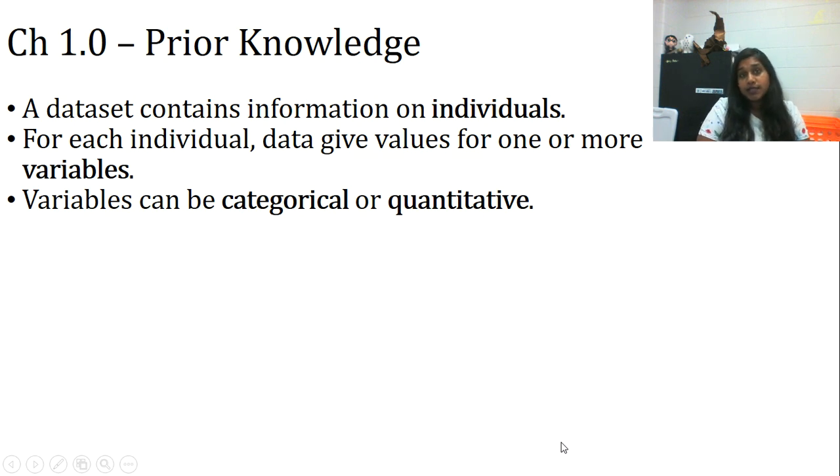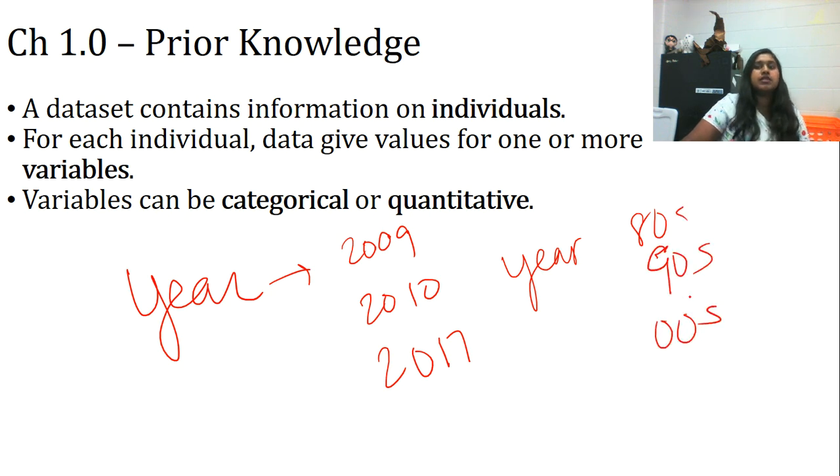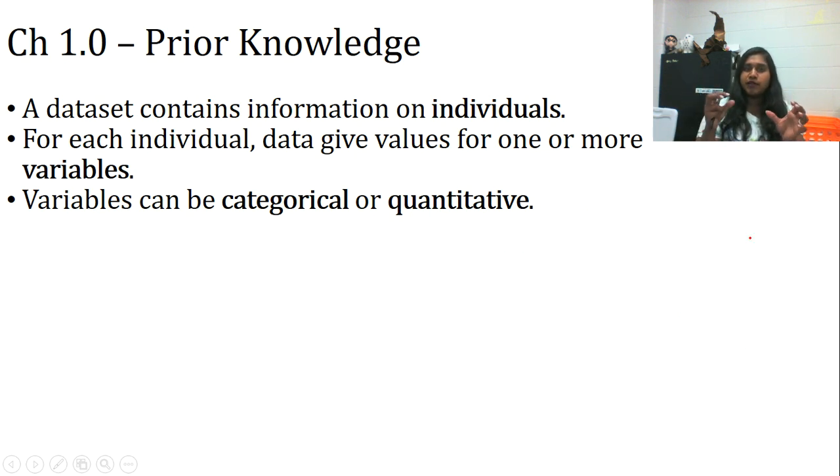Variables can be both categorical or quantitative. They can't be both in the same data set. For example, the most common one that I see is year. If my year is 2009, 2010, 2017, then this would be quantitative data. But if I say the 80s, the 90s, and the 2000s, then this would be categorical data because it's a category. Let's make sure we're identifying that—I saw on your week one quiz that quite a few of us interpreted the year as a category instead of actual quantitative data.